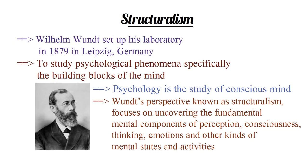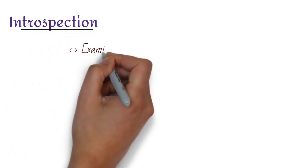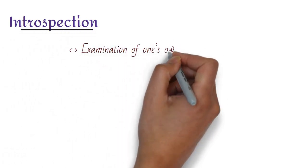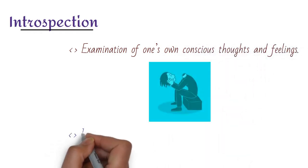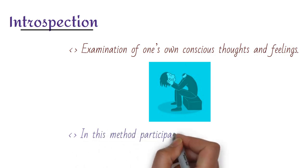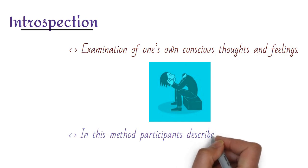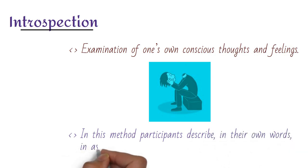Wundt and other structuralists like Titchener used a procedure called introspection to understand the structure of the mind. Introspection is the examination of one's own conscious thoughts and feelings. In introspection method, participants describe in their own words in as much detail as possible what they experience.